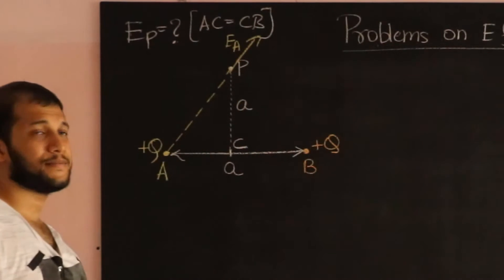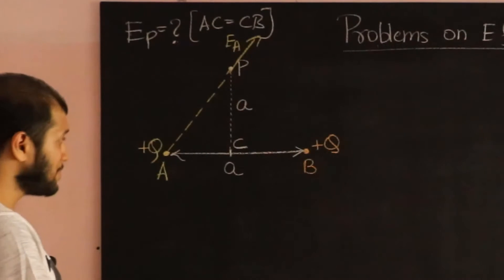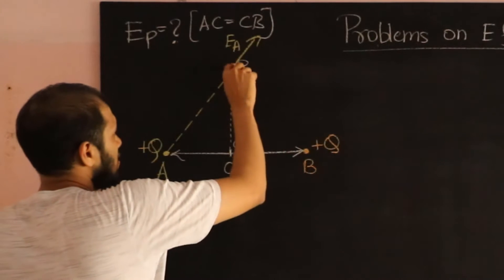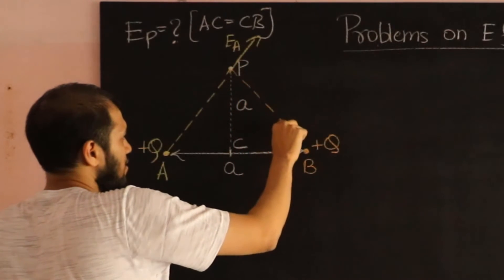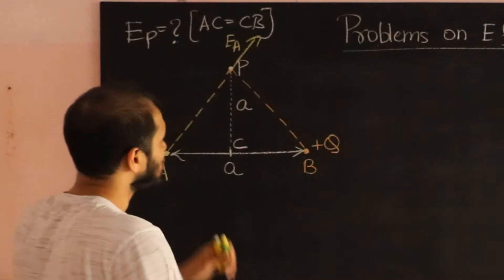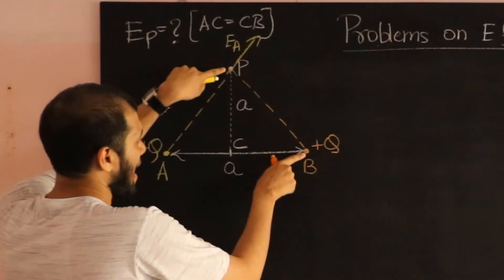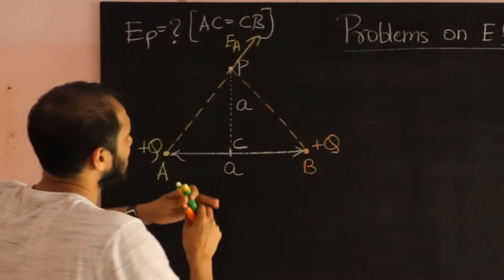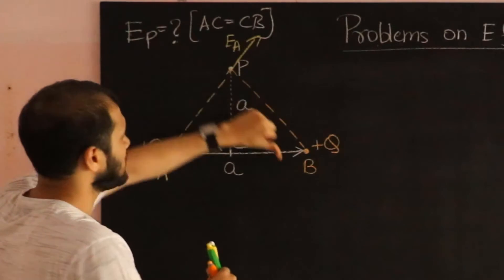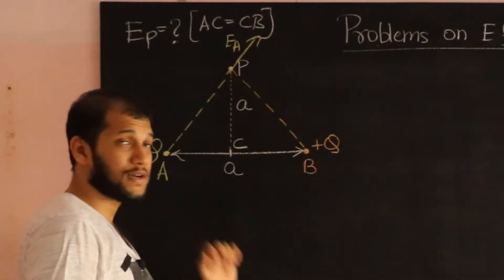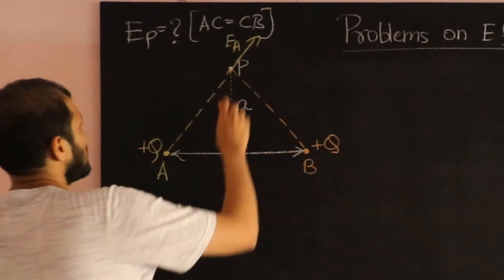We call it as EA. Similarly, due to charge B, I have to draw again a straight line. Because electric field is always along the line joining the point and the charge. Again, electric field is either going to be this way or this way. It's a positive charge. So the electric field now is going to be in this direction.